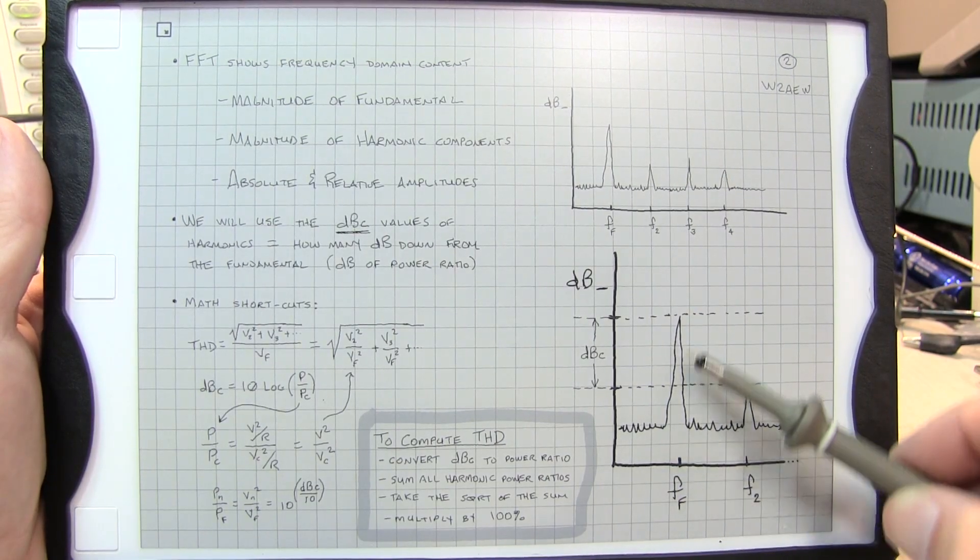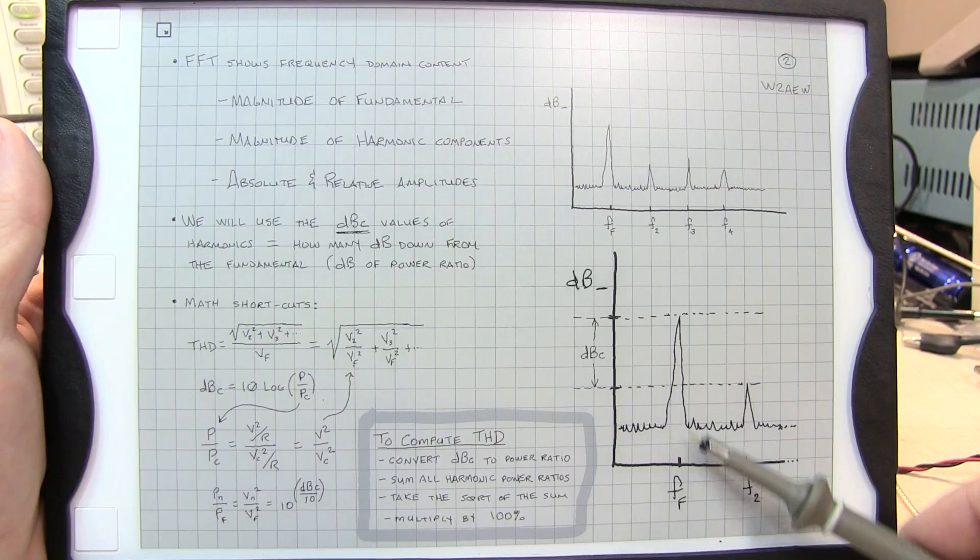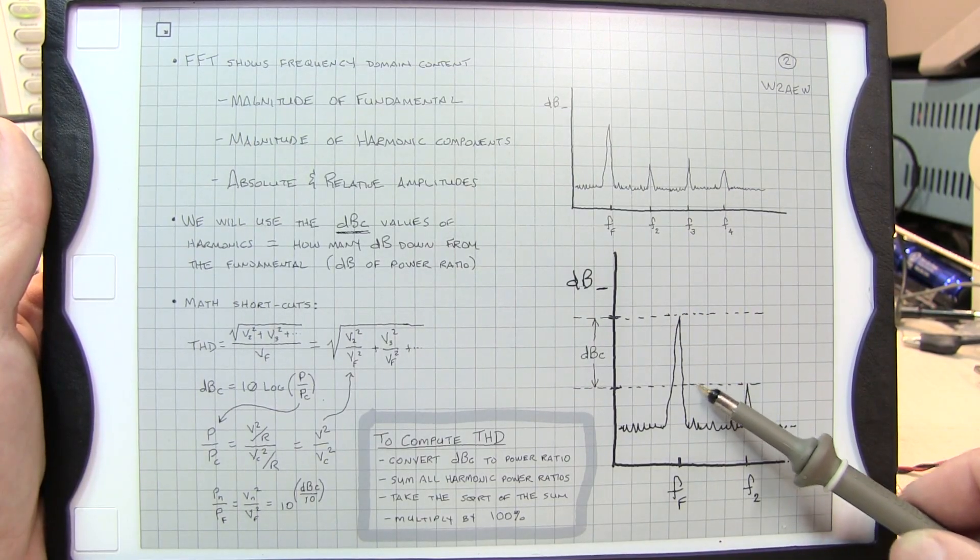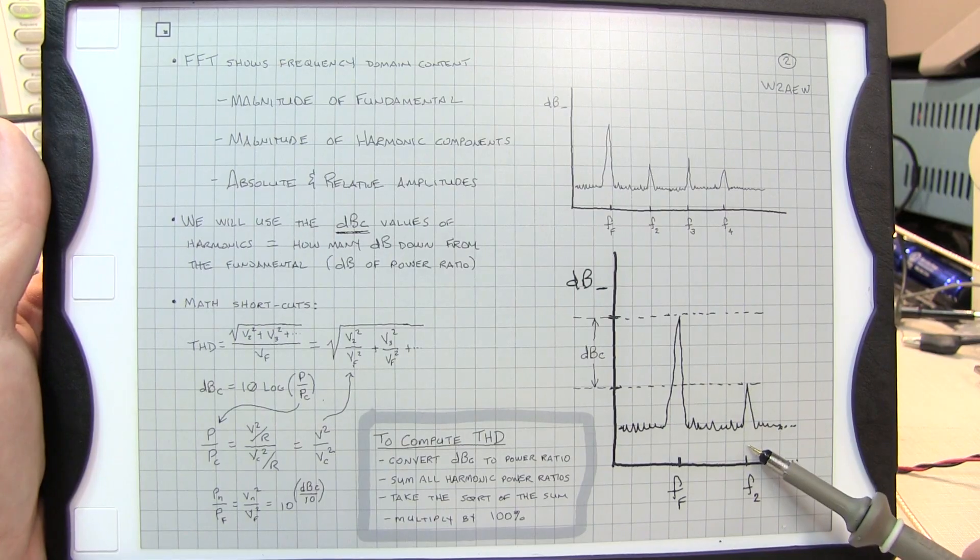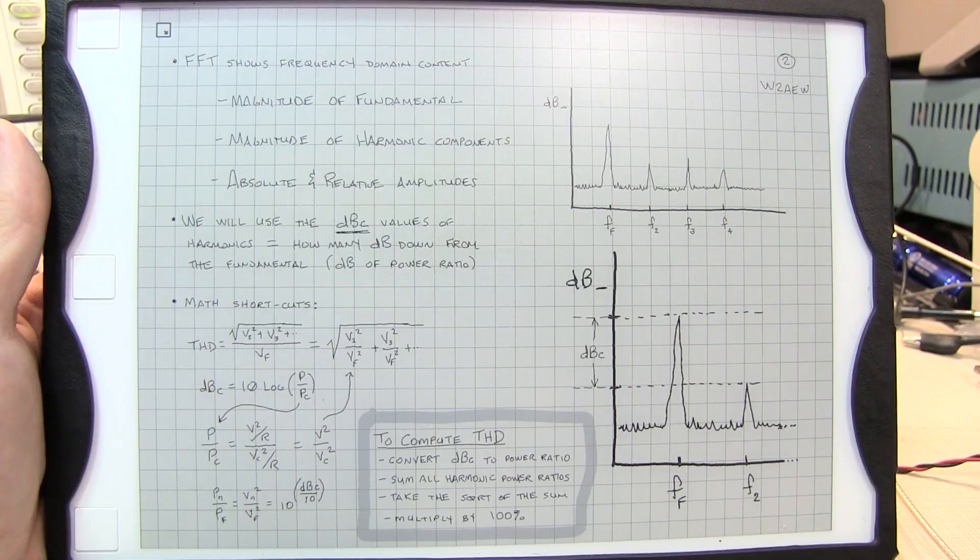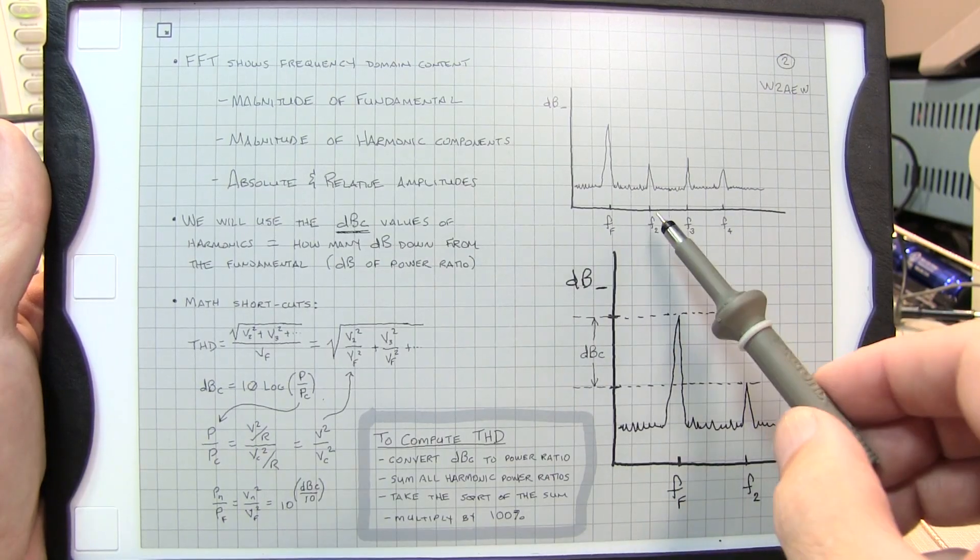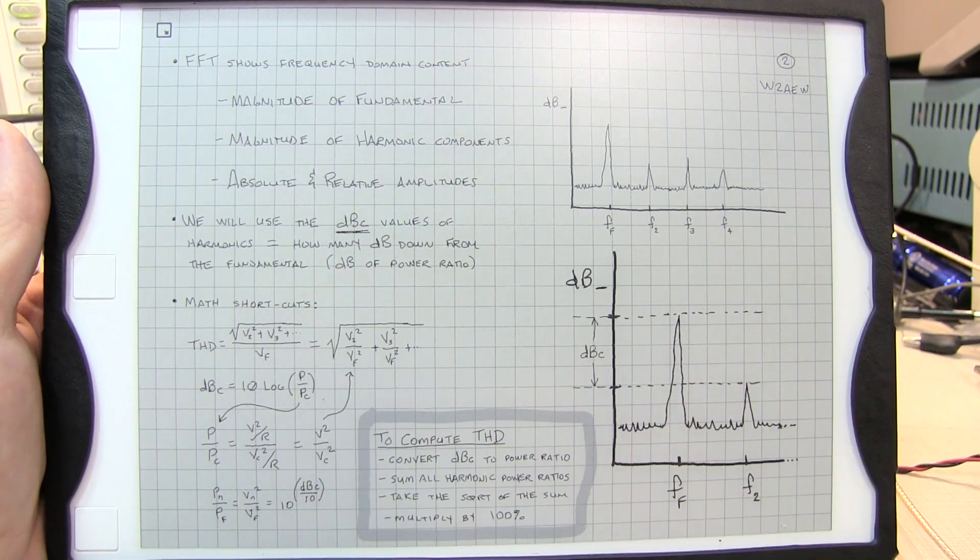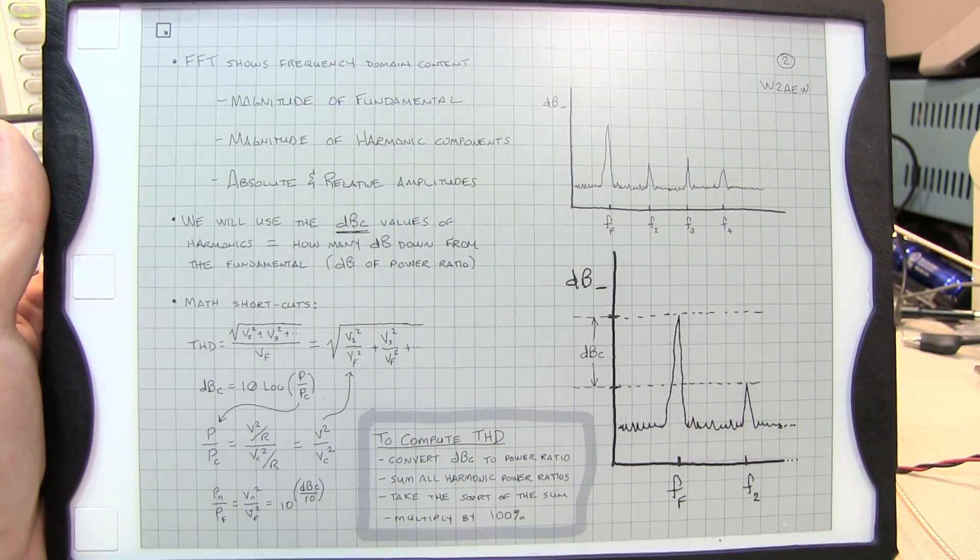This is graphically illustrated here. So let's say we look at the amplitude of our fundamental signal. And if we measure how far down, how many dB down the harmonic is, that becomes the dBc value for that harmonic. And by using the dBc values for each of the harmonics, this will give us a little bit of a shortcut in the math for computing the THD.